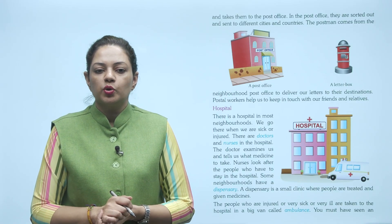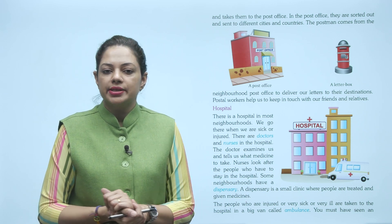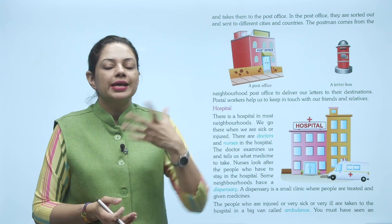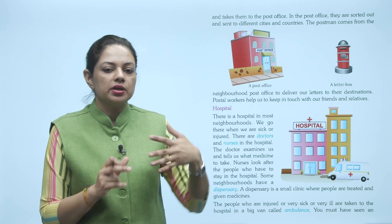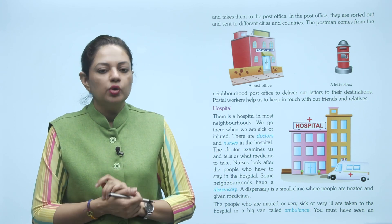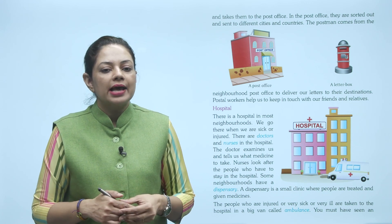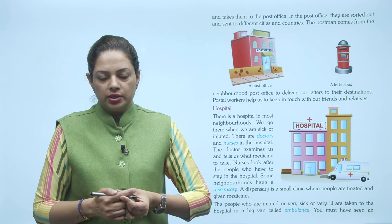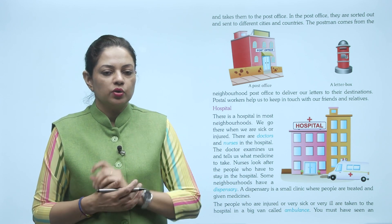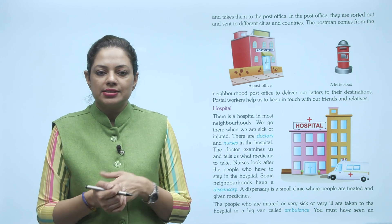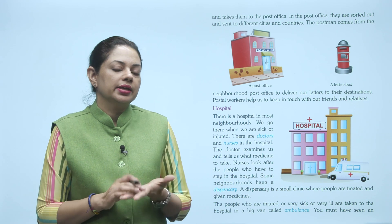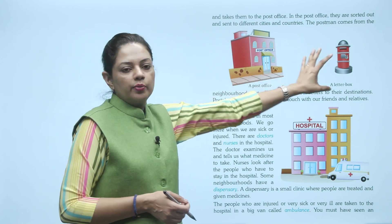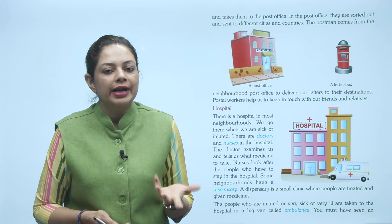The postman comes from the neighborhood post office to deliver our letters to their destination. Aur jo postman hota hai, voh neighborhood post office se aata hai aur jo bhi destination — yaani jo sender ka address hota hai — us tak voh letter ya jo bhi gift hai, parcel hai, deliver kar deta hai. Postal workers help us stay in touch with our friends and relatives — because hum letter likh sakte hain, gift bhej sakte hain apne friends aur relatives ko. Ye ek post office ki picture hai, aur ye letter box ki hai — letter box hamesha red color ke hote hain.